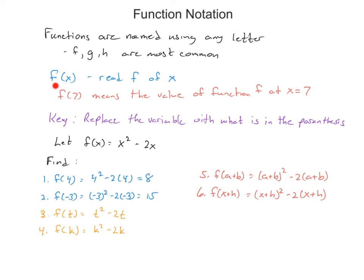The notation is f of x, which means the value of function f at whatever x is. So f of 7 means the value of function f at x equals 7, and you put 7 in for the variable. The key part: replace the variable with whatever's in the parentheses. What's inside those parentheses can be different — numbers, variables, or expressions — and you will be asked to deal with all of them.